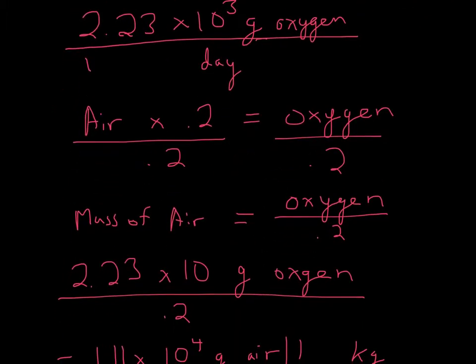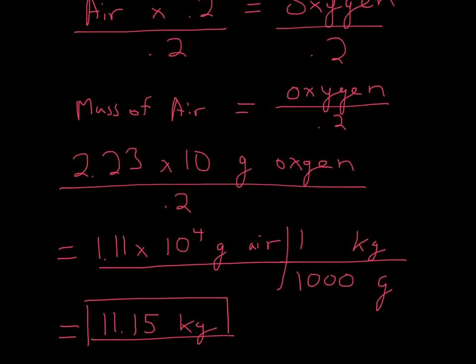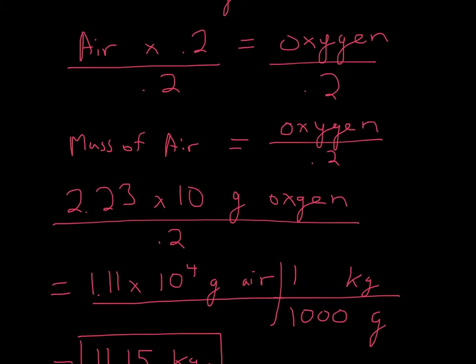So we have oxygen divided by 0.2. I'm going to take this oxygen number and divide it by 0.2 to get the mass of air. So I get 1.1 times 10 to the 4th grams of air.